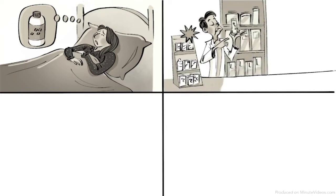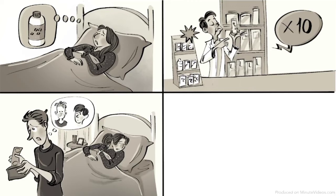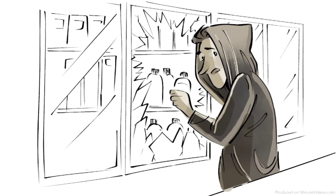The Heinz Dilemma: A woman was on her deathbed. There was only one drug that the doctors thought might save her. The druggist that made that particular medicine sold it for ten times the price of the production costs. The sick woman's husband, Heinz, was poor and could not afford to buy the drug, not even with the financial help of his friends. Heinz then asked the pharmacist to sell it to him for half the price, but he refused. To save the life of his wife, Heinz broke into the man's laboratory and stole the medicine.